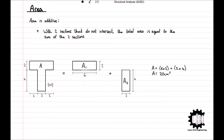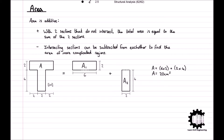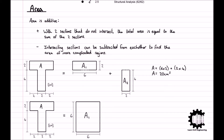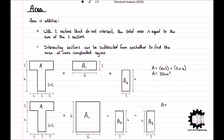It can also be useful to use the principle in reverse, where you can subtract intersecting shapes from each other to find the area of more complicated shapes. Revisiting our example, the total area of this T-shape section, A, can also be expressed as the area of the square containing the T-shape, A1, minus the area of the lower left rectangle, A2, minus the area of the lower right rectangle, A3. So again, we get the total area of the T-shape section is equal to 20 centimeters squared.